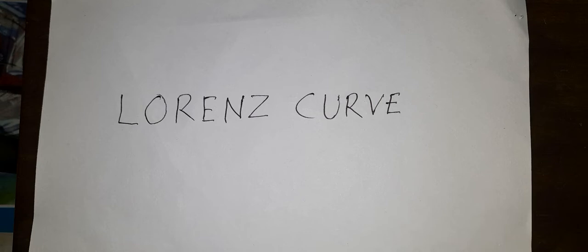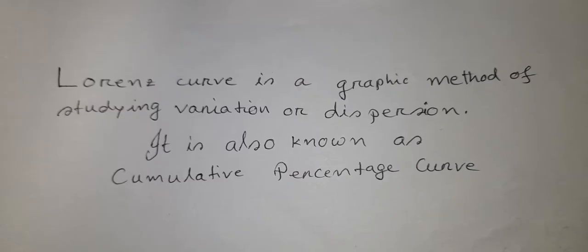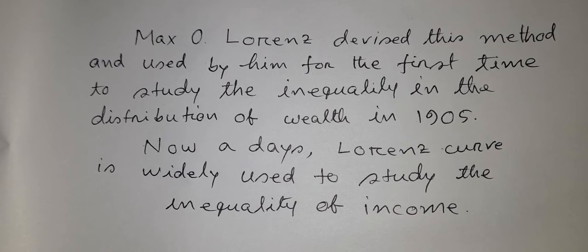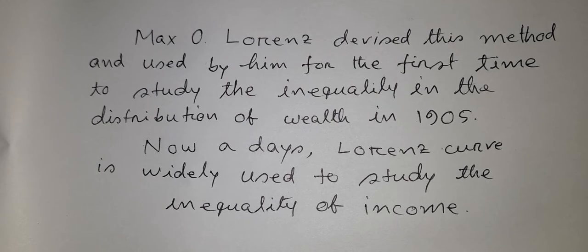In this video, we study the Lorentz curve as a measure of inequality. We learn how to draw a Lorentz curve. The Lorentz curve is a graphic method of studying variation or dispersion, also known as the cumulative percentage curve. Max O. Lorenz devised this method and used it for the first time to study the inequality in distribution of wealth in 1905. Nowadays, the Lorentz curve is widely used to study the inequality of income.